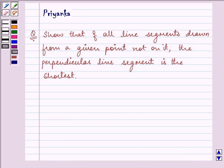Hi and welcome to the session. Let us discuss the question. It says, show that of all line segments drawn from a given point not on it, the perpendicular line segment is the shortest.